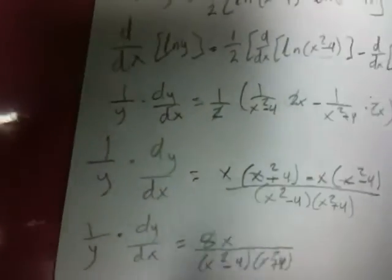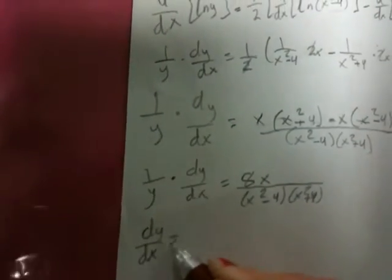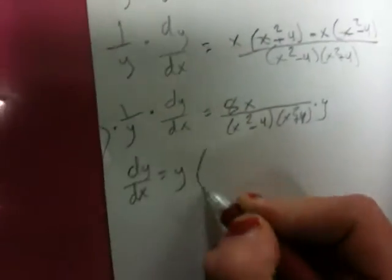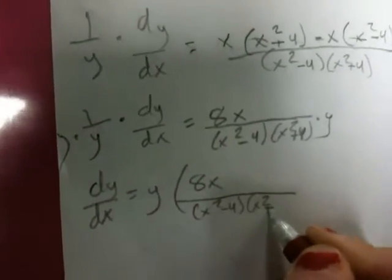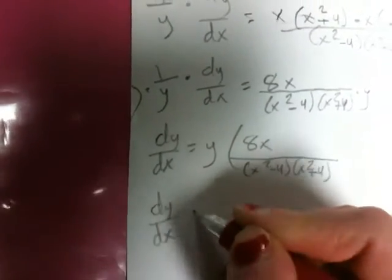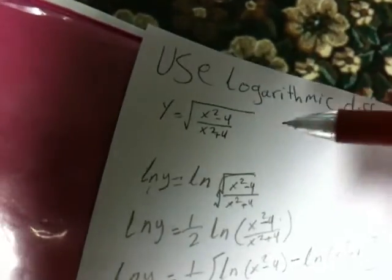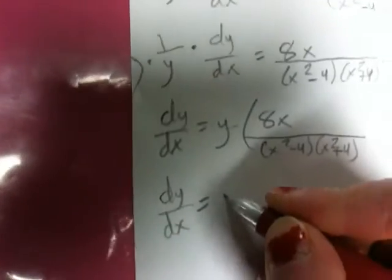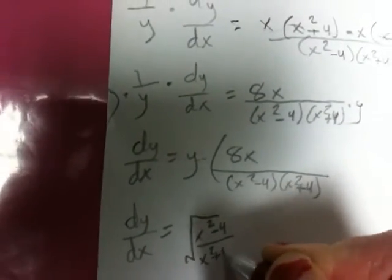We keep the denominator as is. Now solving for dy/dx, we multiply both sides by y and get dy/dx equal y times 8x over (x squared minus 4)(x squared plus 4). We substitute back the original y, which is the square root of (x squared minus 4) over (x squared plus 4).